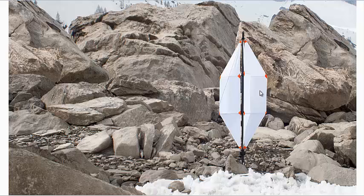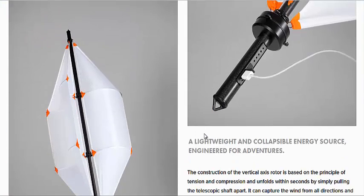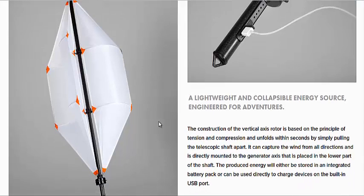It's basically got a nylon or canvas style sail that folds out and is supported by these cables or nylon strings, and it collapses to the size of an umbrella. You can use it to charge your phone or put it into a battery pack.